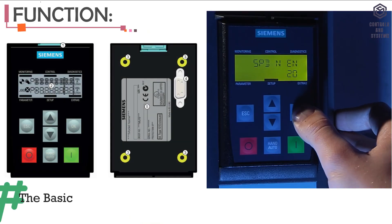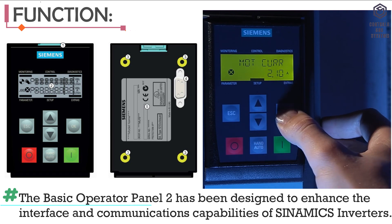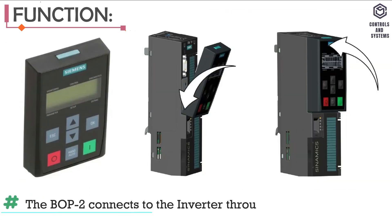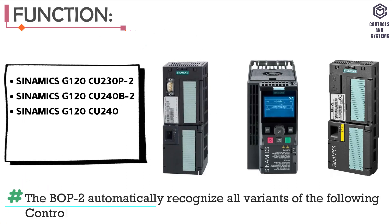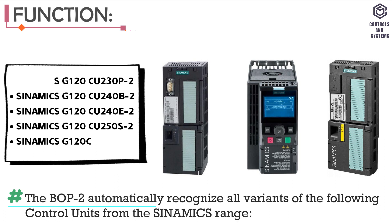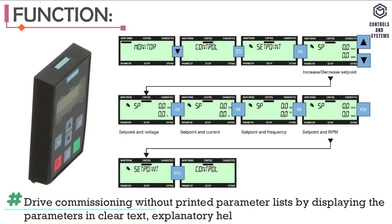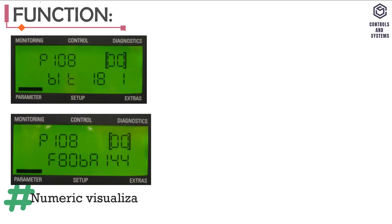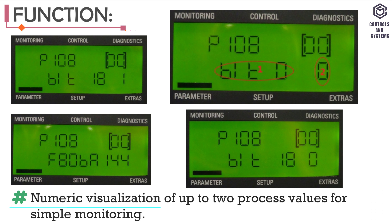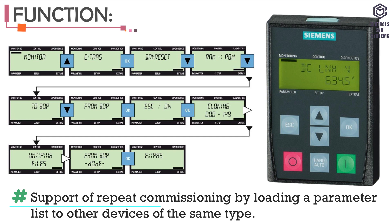Functions: the Basic Operator Panel 2 has been designed to enhance the interface and communications capabilities of Sinamics inverters. The BOP2 connects to the inverter through an RS-232 interface and automatically recognizes all variants of Sinamics control units. Drive commissioning without printed parameter lists by displaying parameters in clear text; explanatory help texts and parameter filters; direct menu-driven and easy diagnostics; numeric visualization of up to two process values; support of repeat commissioning by loading a parameter list to other devices of the same type.